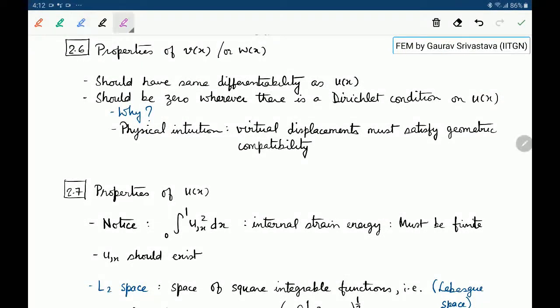Now let us look at what are the properties of v(x) or w(x) which were the arbitrary weight function or the virtual displacement function. One is that it should have the same differentiability as u(x) and it should be 0 wherever there is a Dirichlet condition on u(x). The physical intuition is that the virtual displacement must satisfy geometric compatibility of the main system.